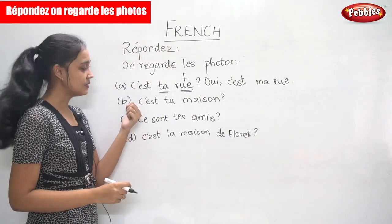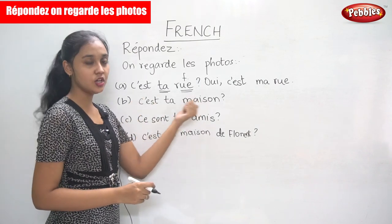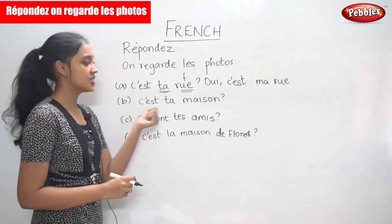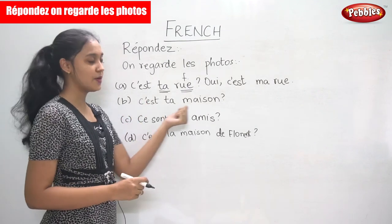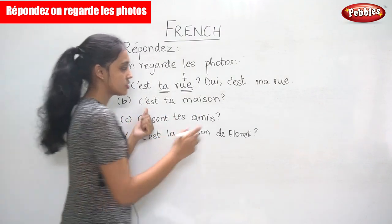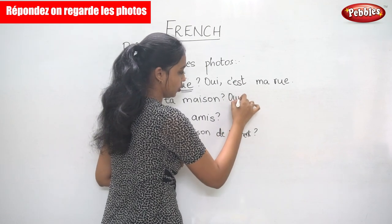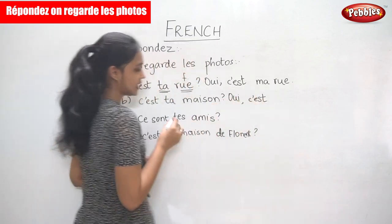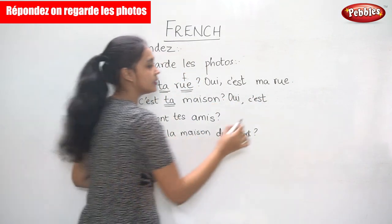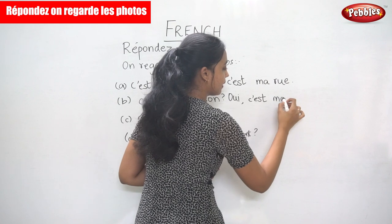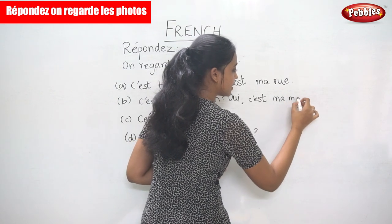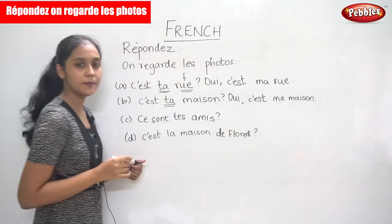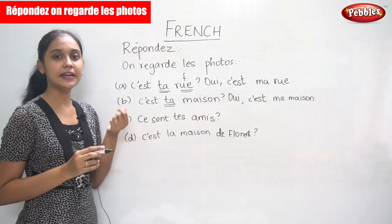The next question: 'C'est ta maison' — it is your house. It is the same format as the first question. You will answer: 'Oui, c'est ma maison.' In this case also, 'ta' becomes 'ma.' 'C'est ma maison.' Yes, it is my house.